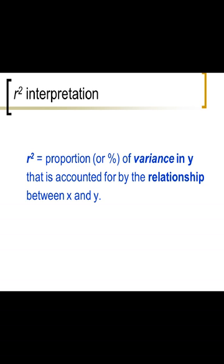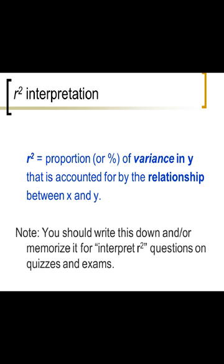That's the interpretation. The proportion of variance in Y that is accounted for by the relationship between X and Y. So if R squared is 0.5, then half of the variation in Y, 50% of the variability in Y is accounted for by its relationship with X. So this is a really important thing to know. And we're done with that lecture, and we'll move on to more regression-y lectures when we have a chance.